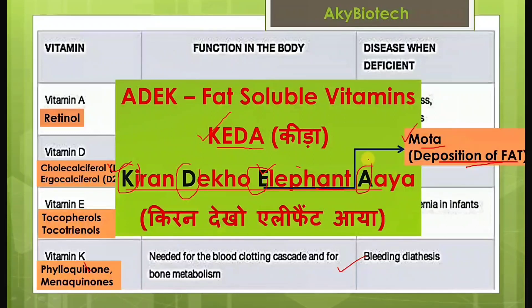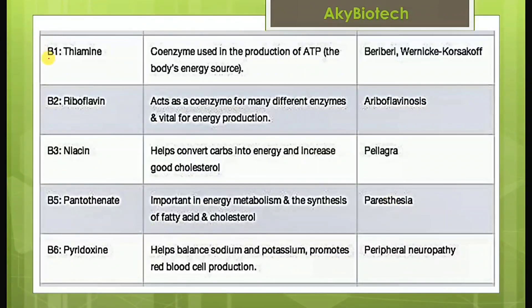Moving on to the water-soluble B vitamins: vitamin B1, B2, B3, B5, and B6. Vitamin B1 is known as thiamine. It acts as a coenzyme used in the production of ATP, the body's energy source. Deficiency of this vitamin leads to beriberi and Wernicke's encephalopathy.